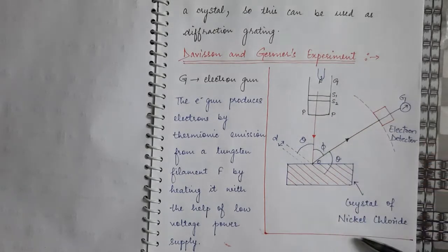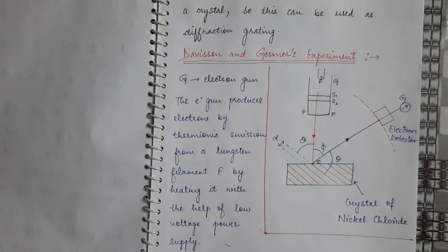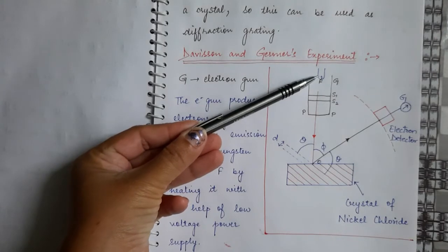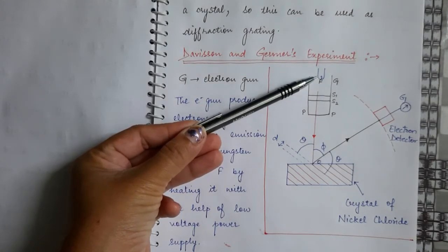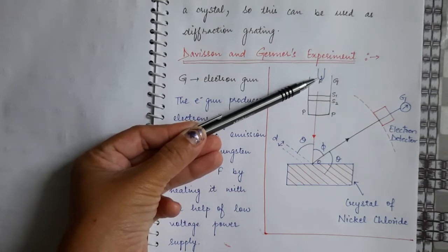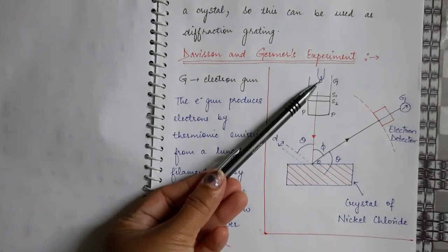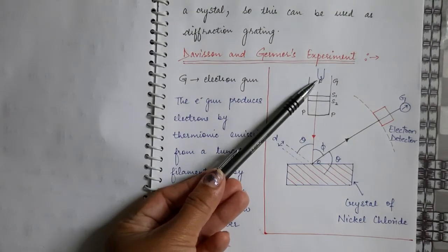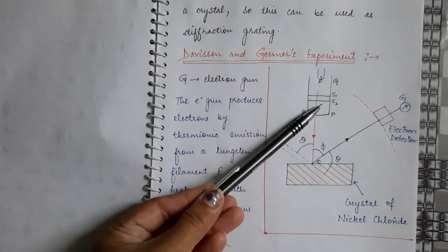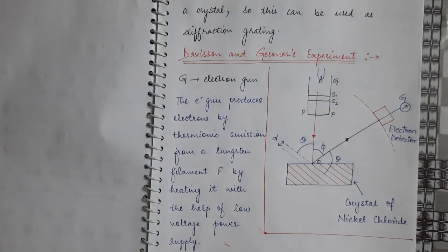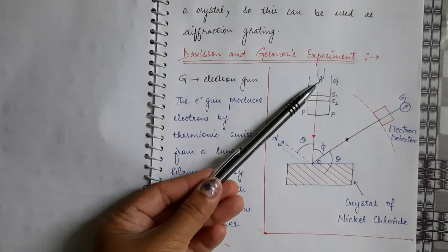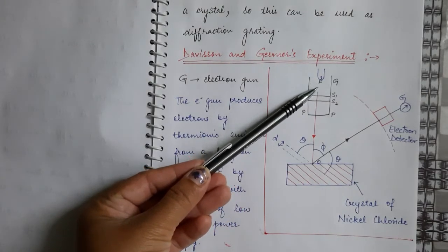This is Davisson and Germer's apparatus, used to study the experimental verification of de Broglie waves. There is a tungsten filament. By heating this tungsten filament with the help of a low voltage power supply, it will emit electrons because of thermionic emission. Those electrons are then accelerated by a positive potential.